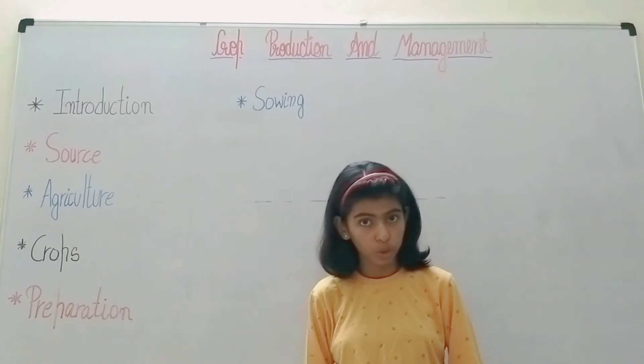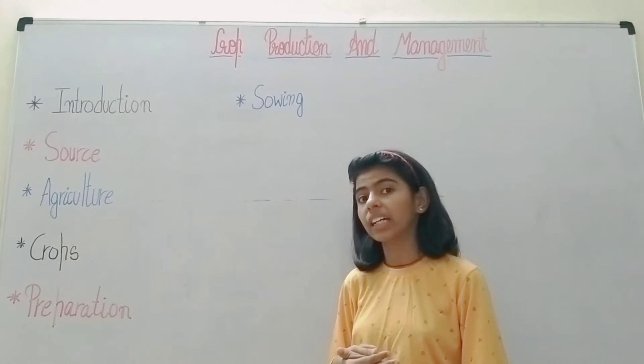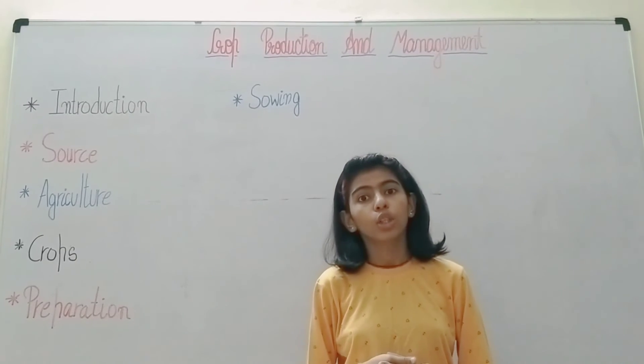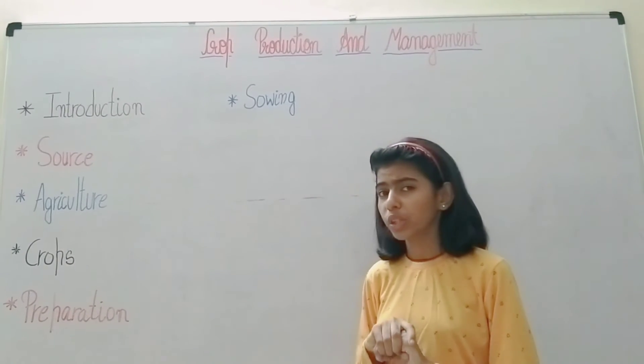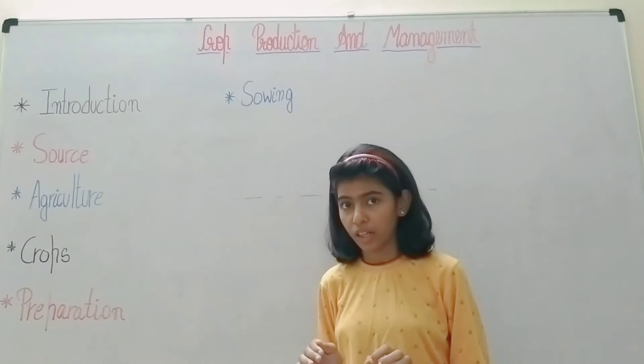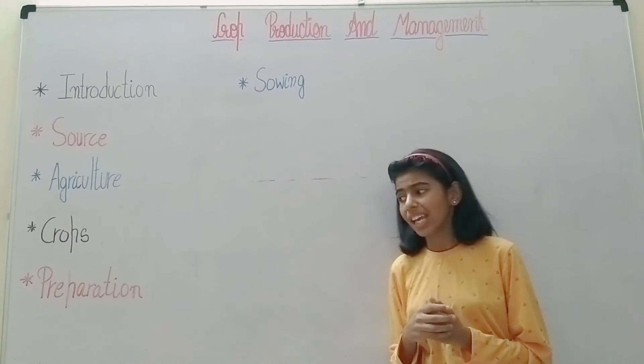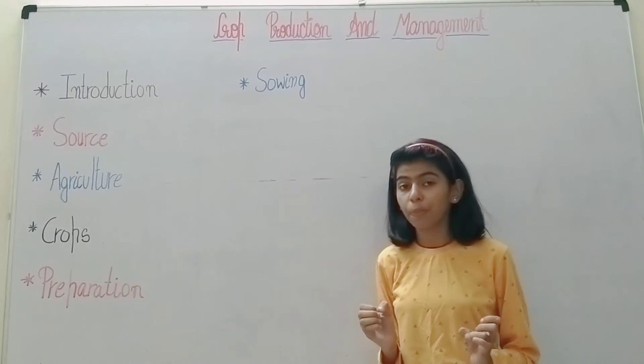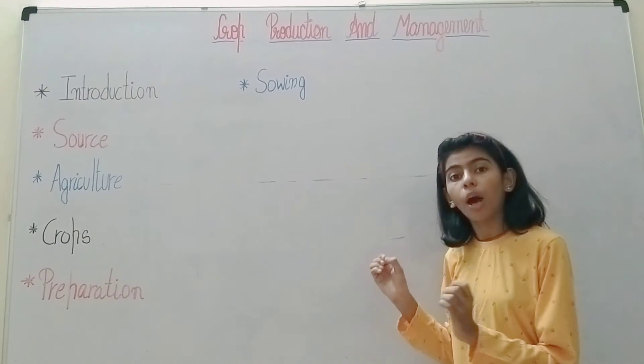After plowing, large crumbs of soil are left. To make the land smoother, we require a leveler which is 1.8 to 2 meters long. Now we have prepared the soil for the most important part of crop production.